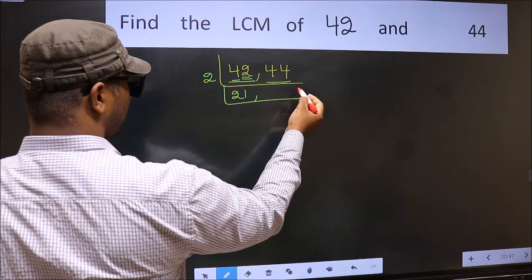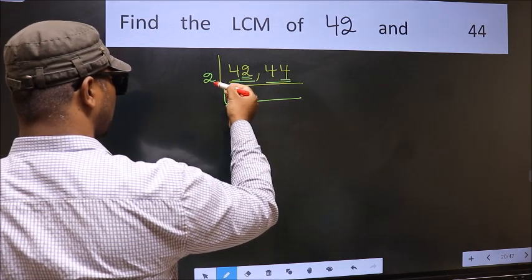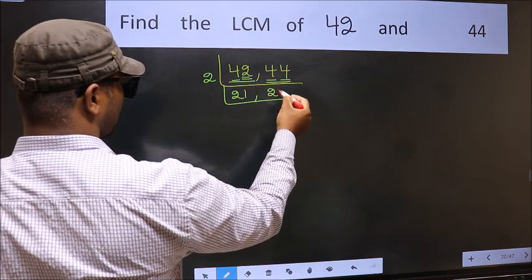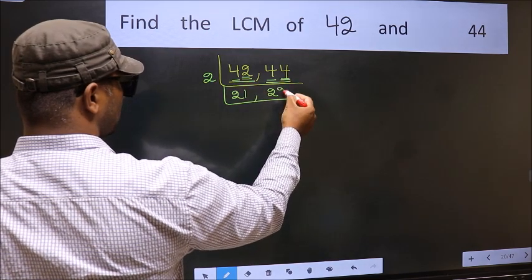Now the other number 44. Last digit 4, so this is divisible by 2. First number 4, when do we get 4 in 2 table? 2 times 2 is 4. The other number 4, when do we get 4 in 2 table? 2 times 2 is 4.